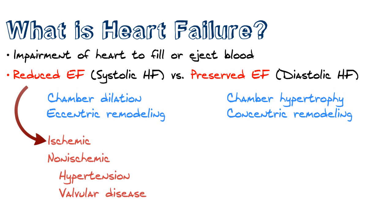A simple example is to think of the heart failure like a cup. In systolic heart failure, you're expanding the actual chamber volume of the cup but thinning out the wall in doing so. In preserved or diastolic heart failure, you're thickening the wall, and by thickening the wall of that cup, you're decreasing the amount of volume that actually fills into that cup. It's a simple way to differentiate between the two heart failures.